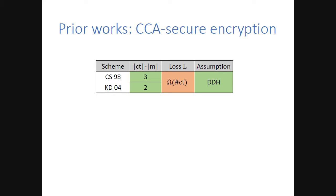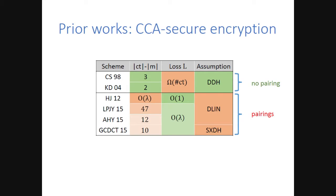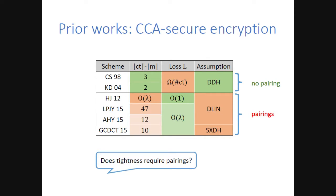Now let's look at prior CCA encryption schemes. First, we have very efficient schemes, starting with Cramer-Shoup encryption, where the ciphertext overhead is three group elements, improved by Kurosawa-Desmedt to two group elements. They are based on DDH, which is good. But because they use a hybrid argument to get security for many challenge ciphertexts, the security loss is large—it's non-tight. Then there is a series of tight constructions starting with Hofheinz-Jager at Crypto 2012. But these schemes have larger ciphertext overhead—the number of group elements is larger, even though in the latest work last year, efficiency has been significantly improved. More importantly, all these tight constructions use a qualitatively stronger assumption: they use pairings, which is not the case for non-tight schemes. So a natural question is: does tightness intrinsically require a pairing?